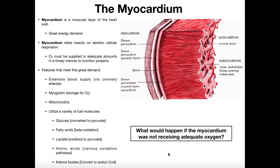Just a brief review: we've got three major regions or layers of the heart. The inner part that makes direct contact with the blood moving through the chambers, like the ventricle and atria, is of course the endocardium. And then this layer, which is really what we're going to talk about in this video, is the myocardium.